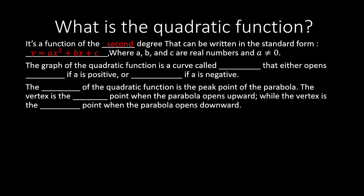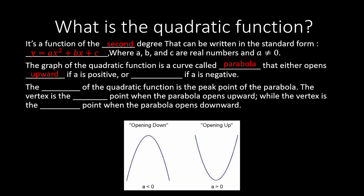Where a, b, and c are real numbers and a is not equal to zero. The graph of the quadratic function is a curve called a parabola that either opens upward if a is positive, or downward if a is negative. The vertex of the quadratic function is a peak point of the parabola — it is the lowest point when the parabola opens upward, and the highest point when the parabola opens downward.